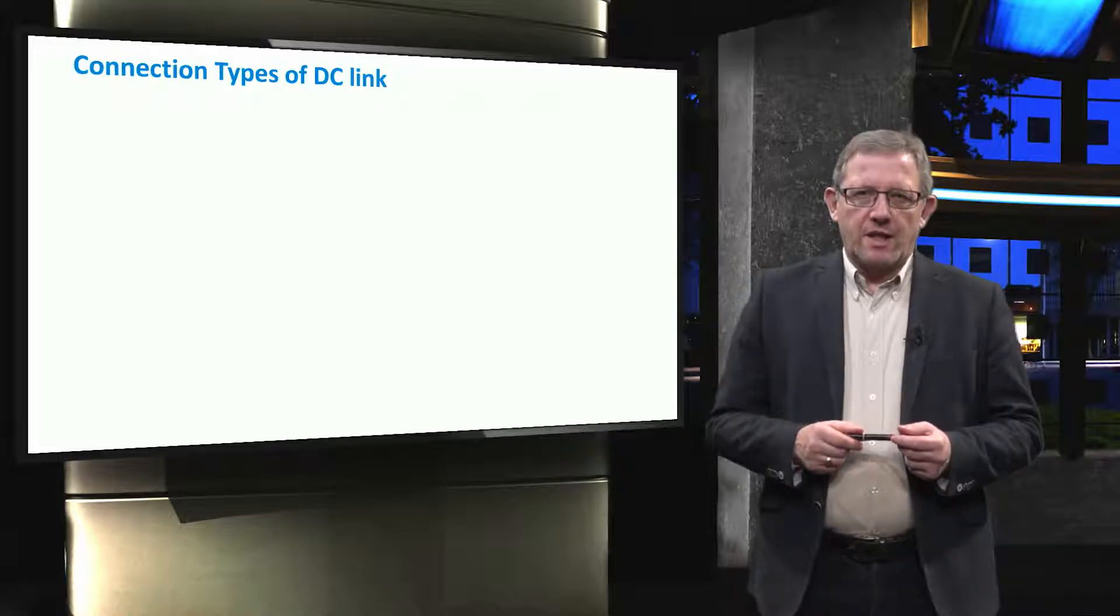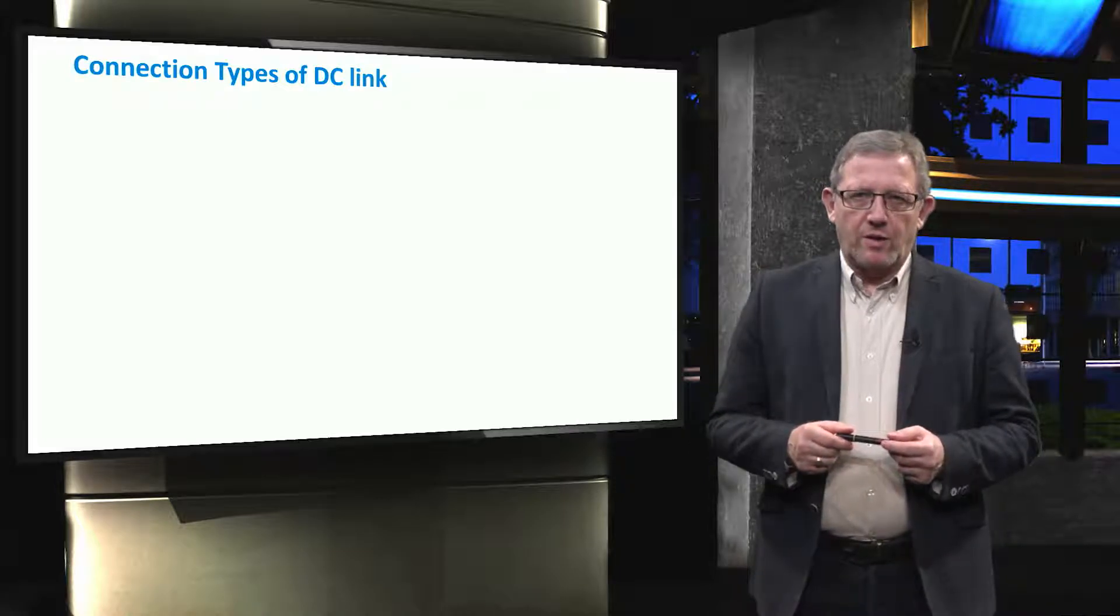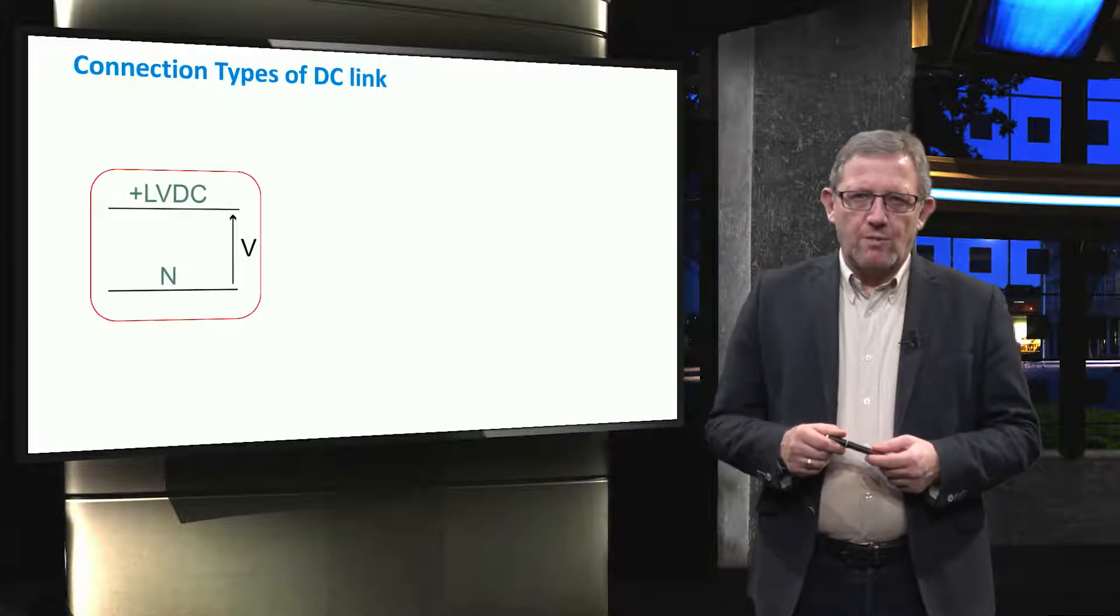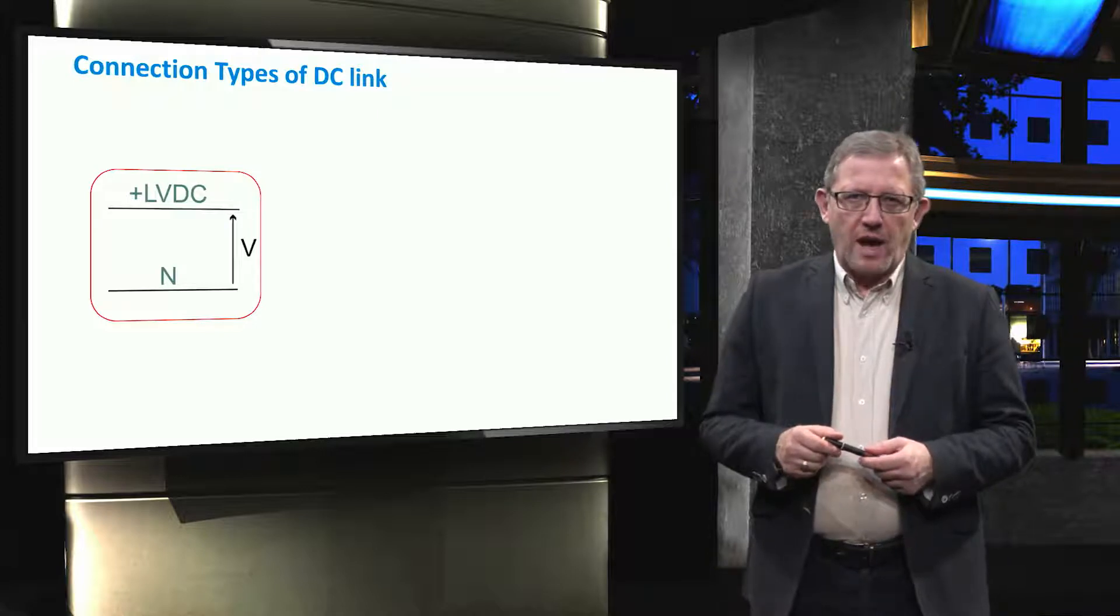In general, DC link can be created in three different connection types. In a DC microgrid, it is shown in a figure that monopolar connection type uses a low voltage conductor and a ground return.